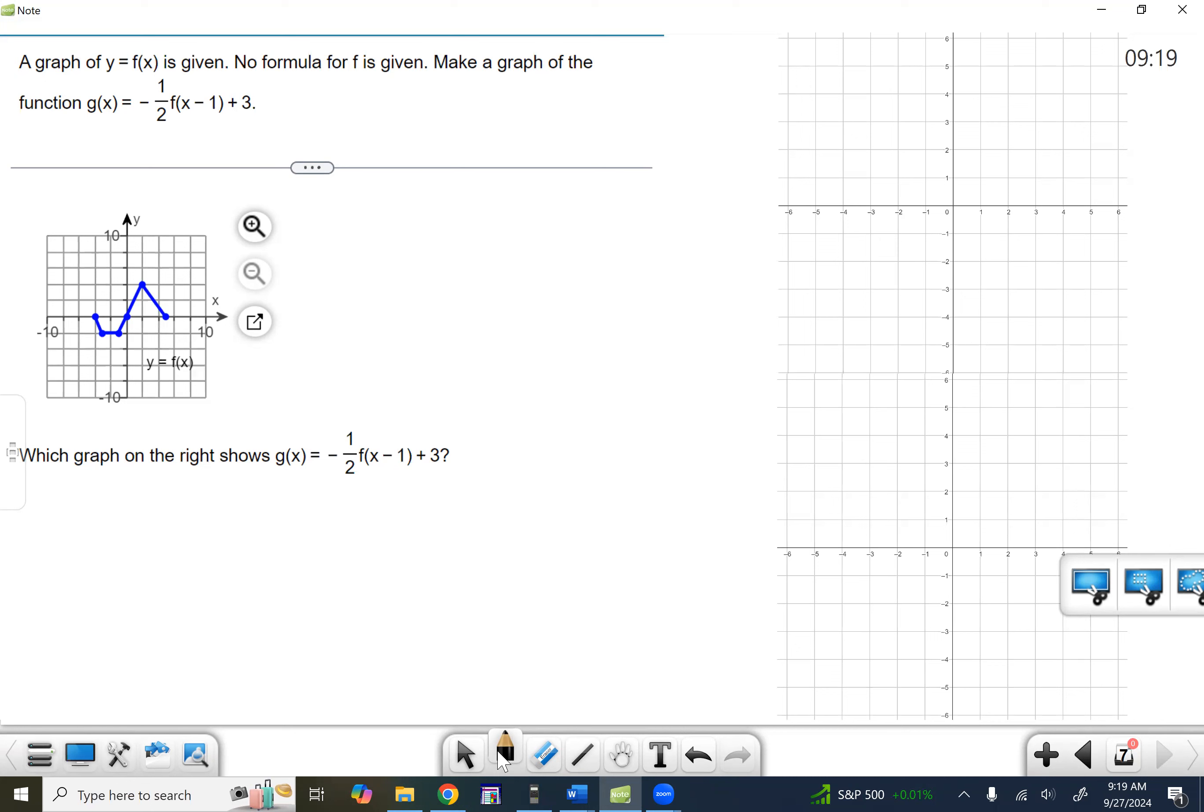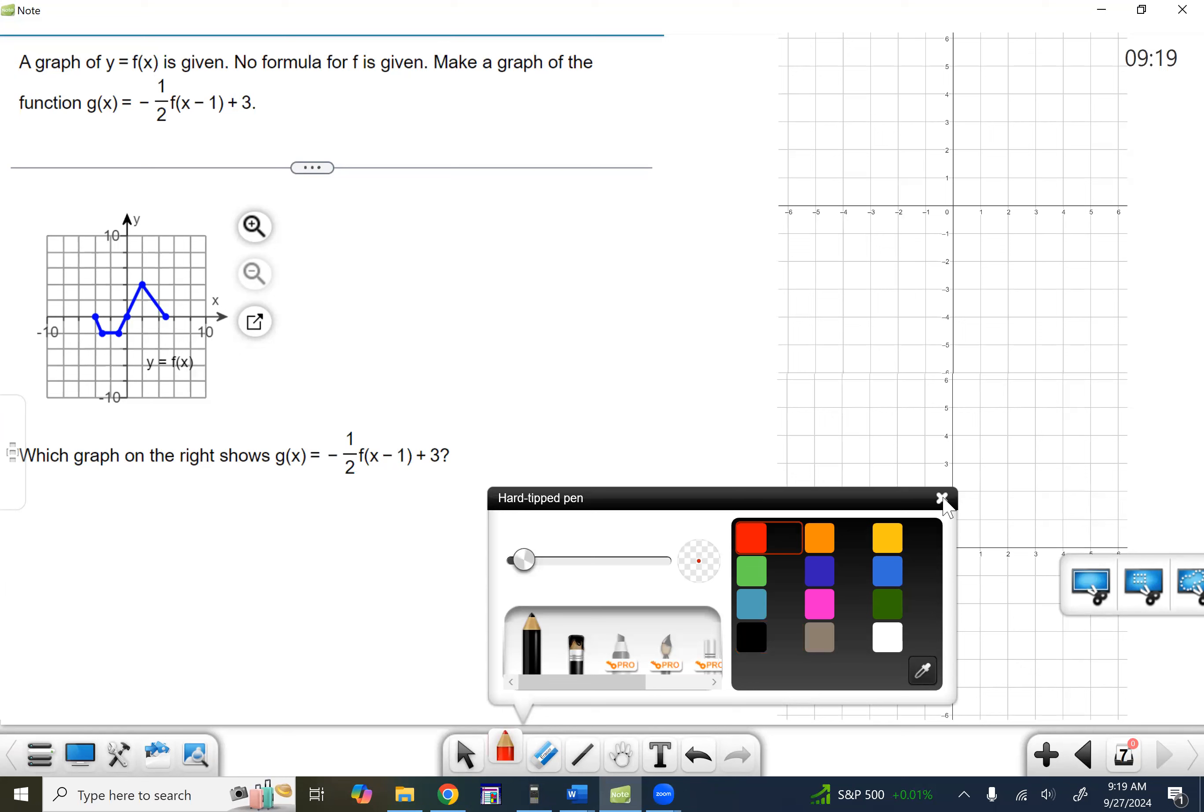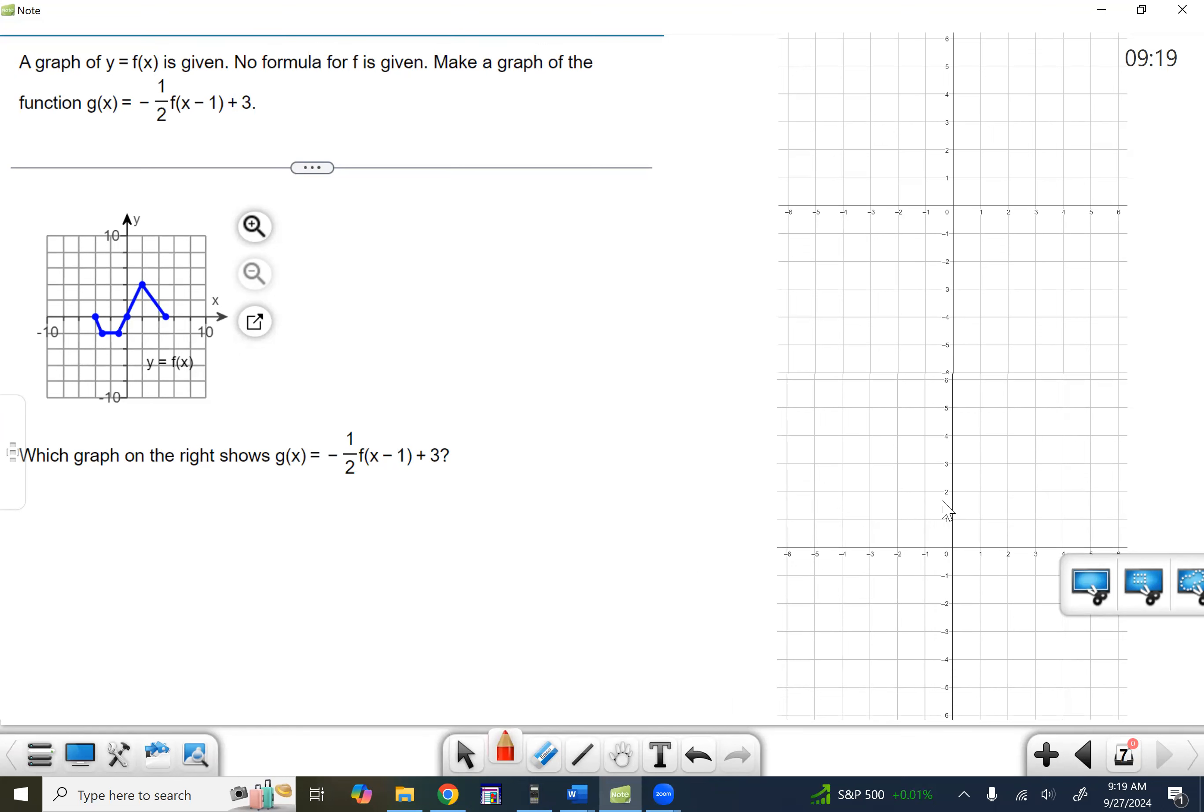So let's go through and label what each constant or negative sign does to the problem. A negative in front of the function is going to reflect over the x-axis. And we're going to follow the reflect, stretch or shrink, and translate—the RST alphabet. So I'm just going to do that over here.